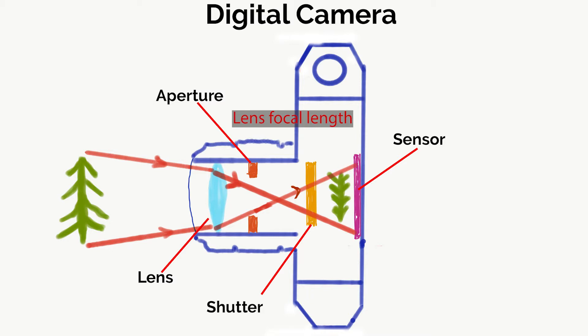The focal length is usually printed or stated on your lens in millimeters, somewhere on the barrel of the lens. It's not the actual measurement or physical length of the lens, but a calculation of the distance from the point where the light rays converge to form a sharp image on the sensor. What we're really interested in as photographers is the angle of view we get from our lens and the magnification we get from our lens.